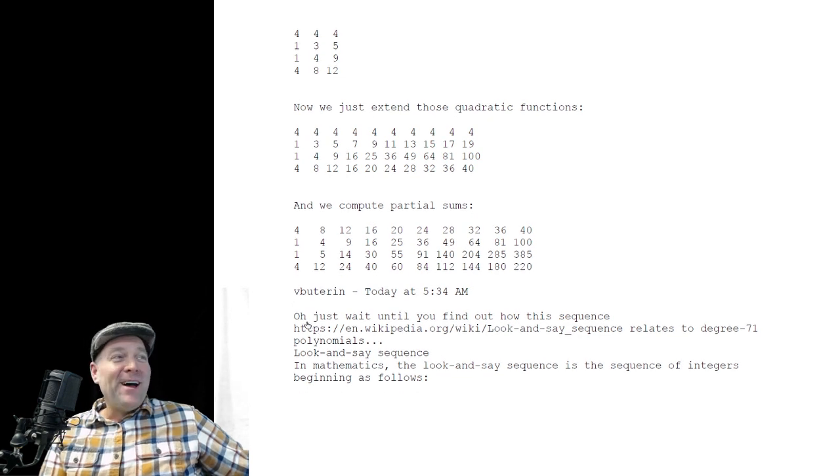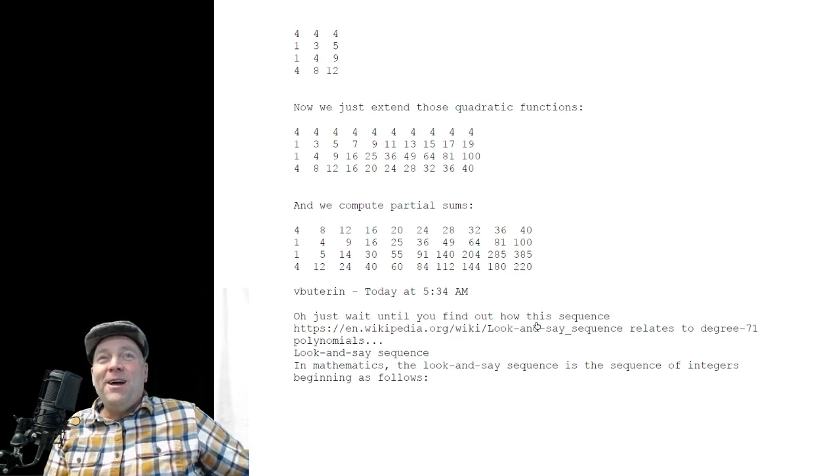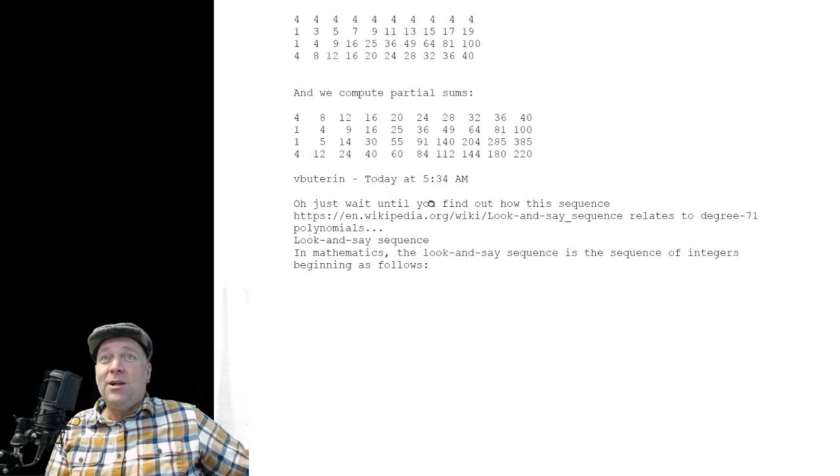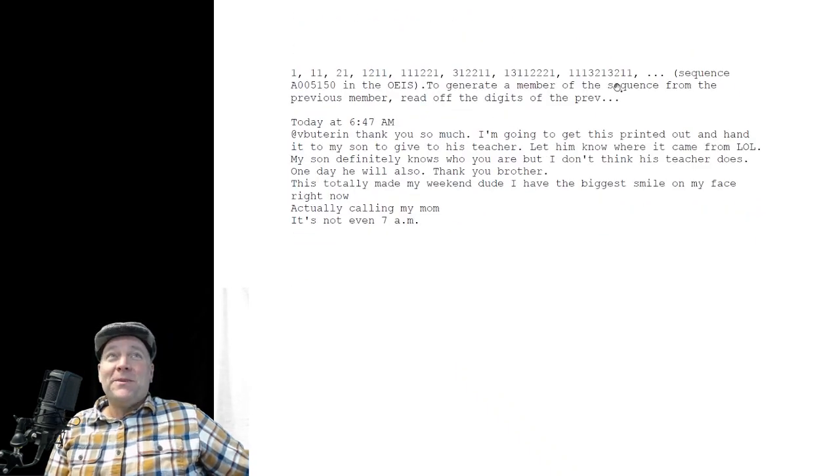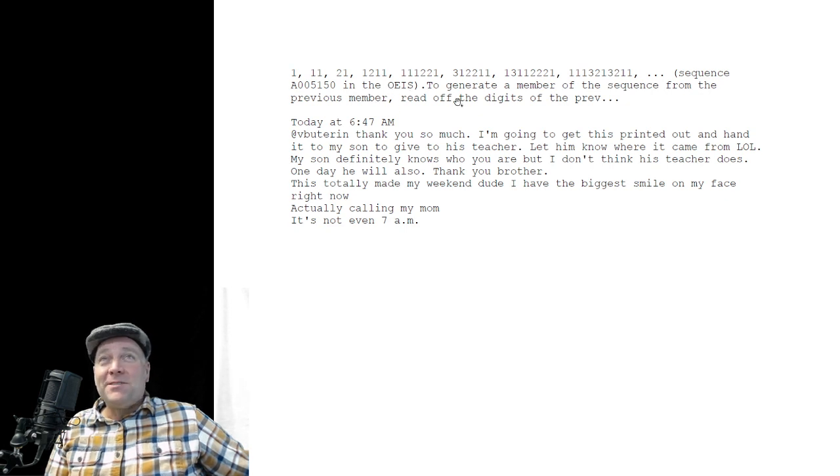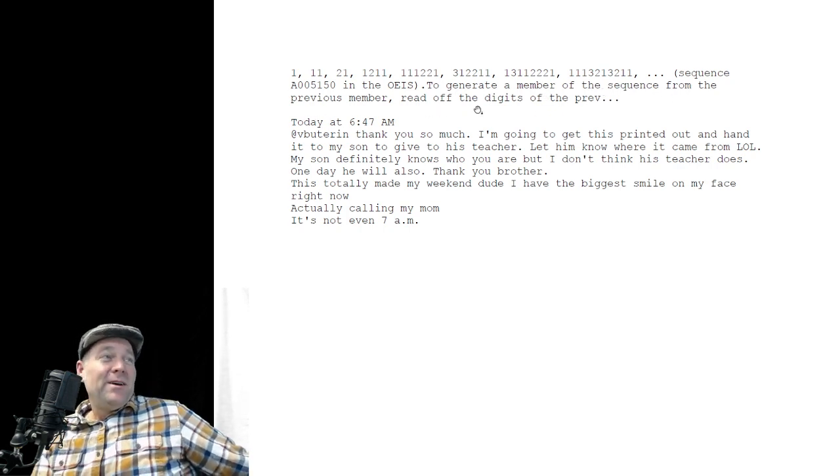And then this reply, this is where I started to chuckle a bit. Wait until you find out how this sequence relates to degree 71 polynomials. The look and say sequence, in mathematics, the look and say sequence is the sequence of integers beginning as follows. And then he had some more text in the reply down here. And I was lost about a paragraph ago. So to generate a member of the sequence from the previous member, read off the digits of the previous.